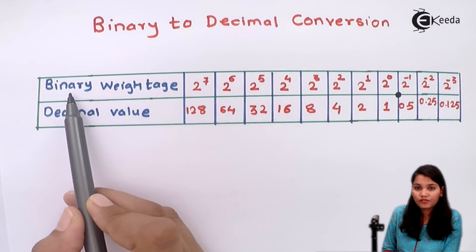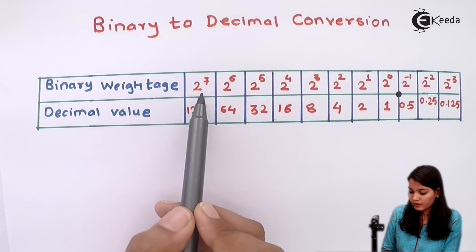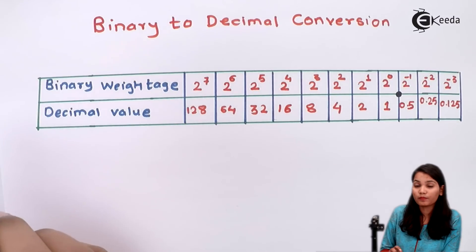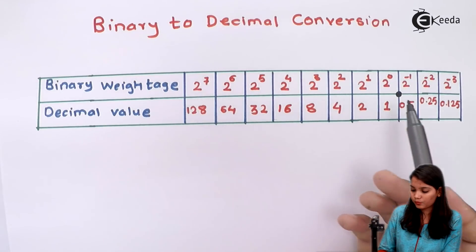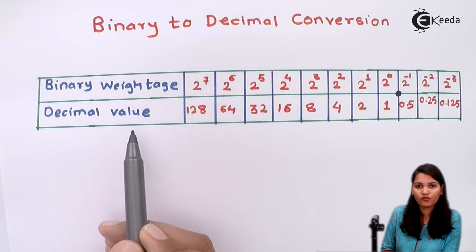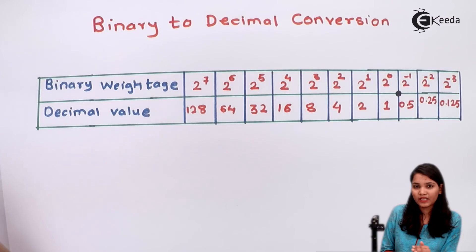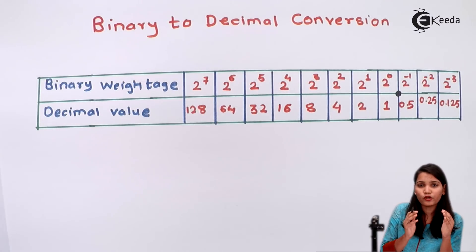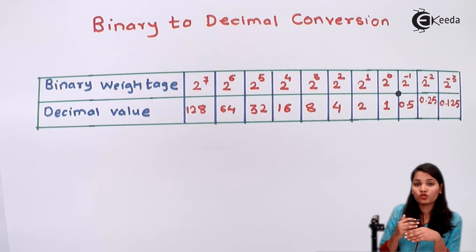I have written here the binary weightage — that is, multiples of 2 — because the base value for binary is 2. The binary weightage goes from 2 raised to 7 down to 2 raised to 0, along with the corresponding decimal value for each. We need to assign decimal values to the binary weightages, so let's see what those values are.